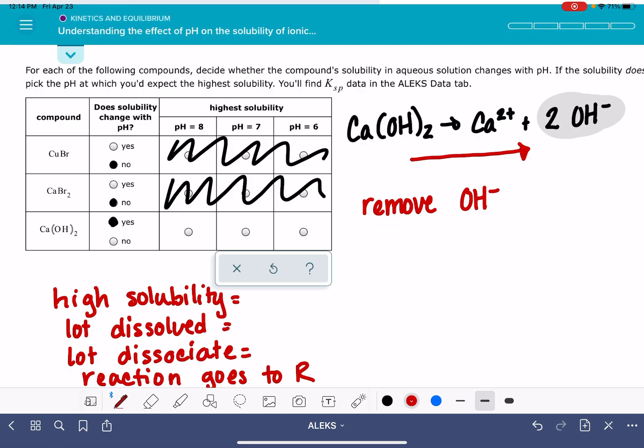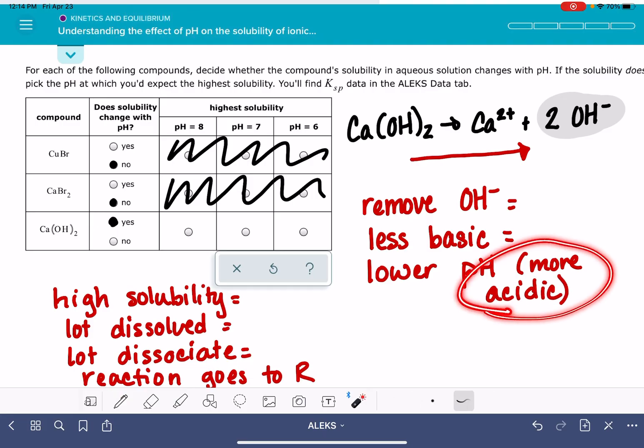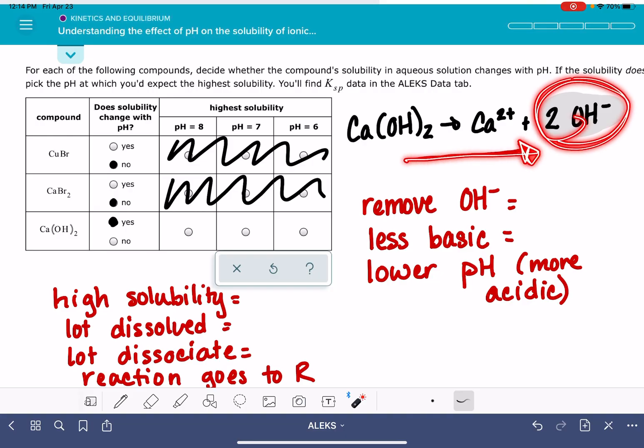Removing OH- means that we're making the solution less basic, which means that we are lowering the pH. So the lower the pH gets, which means that the solution is more acidic, the lower the pH gets, we're making the solution more acidic, we're removing the OH-, the position of equilibrium is going to shift to the left, the calcium hydroxide is going to dissociate.